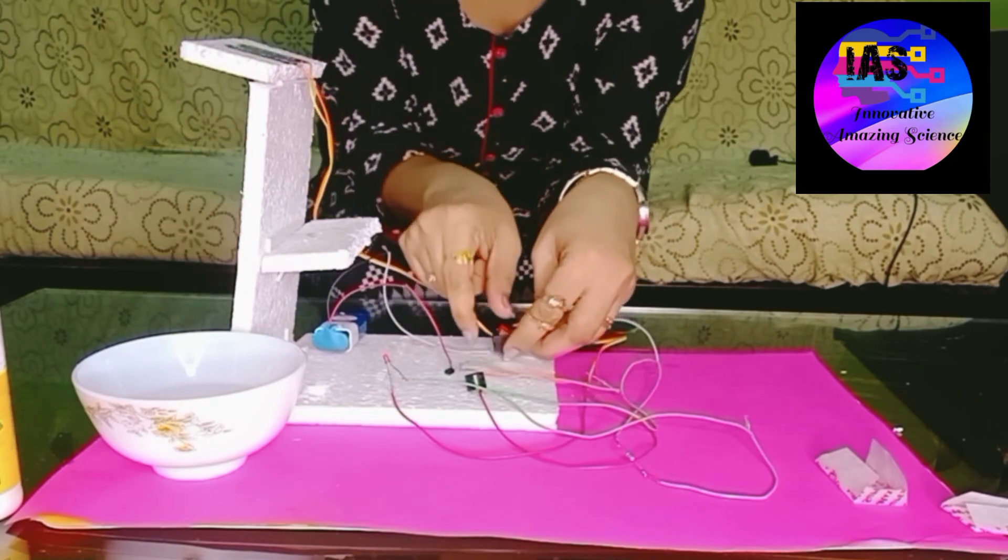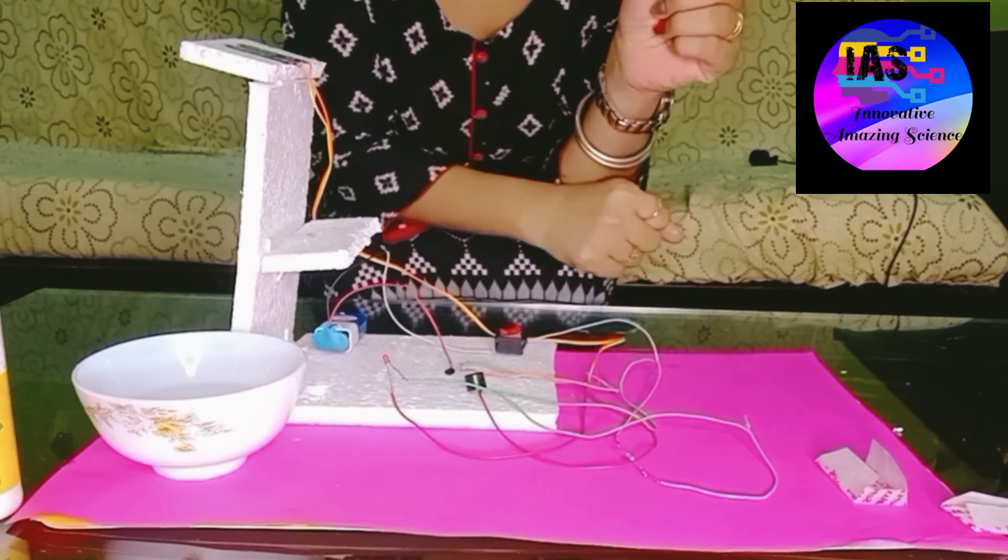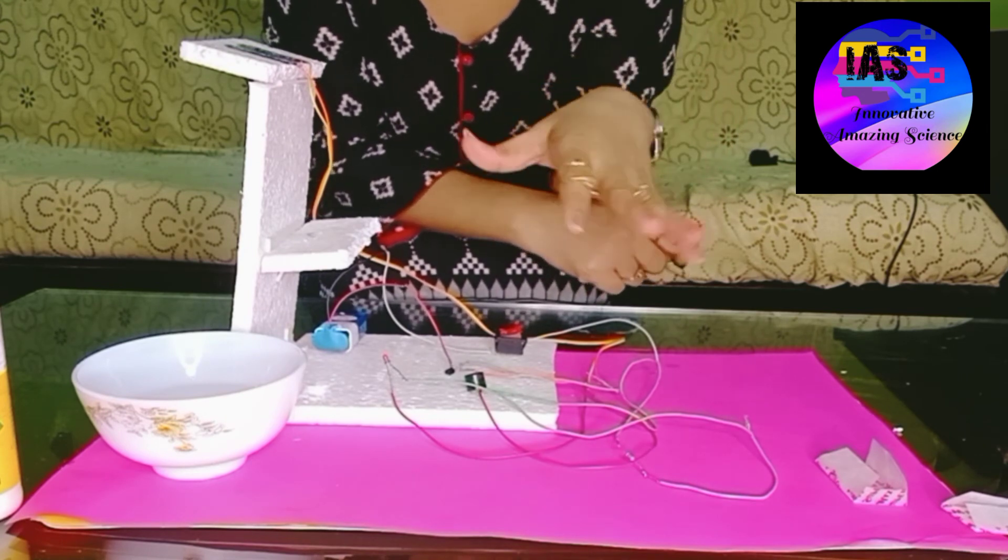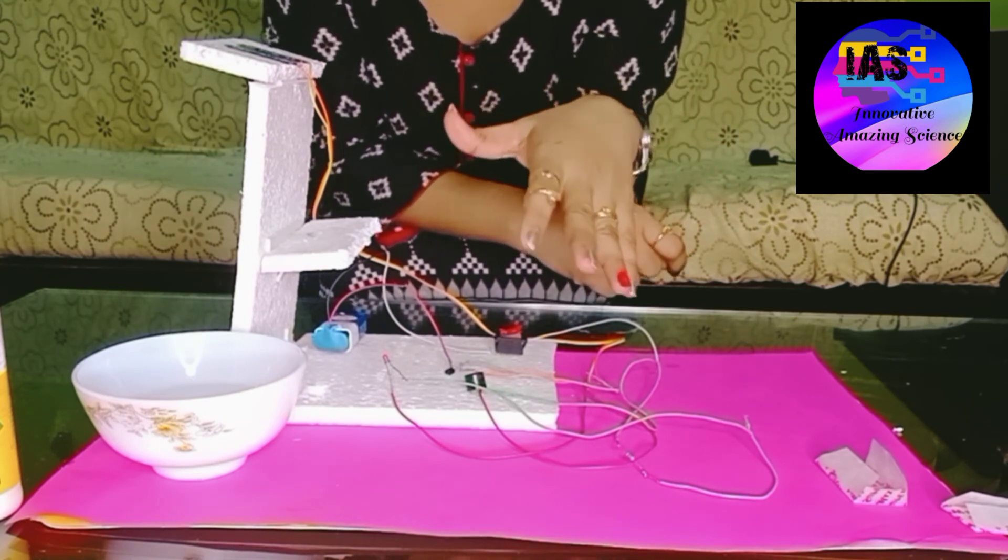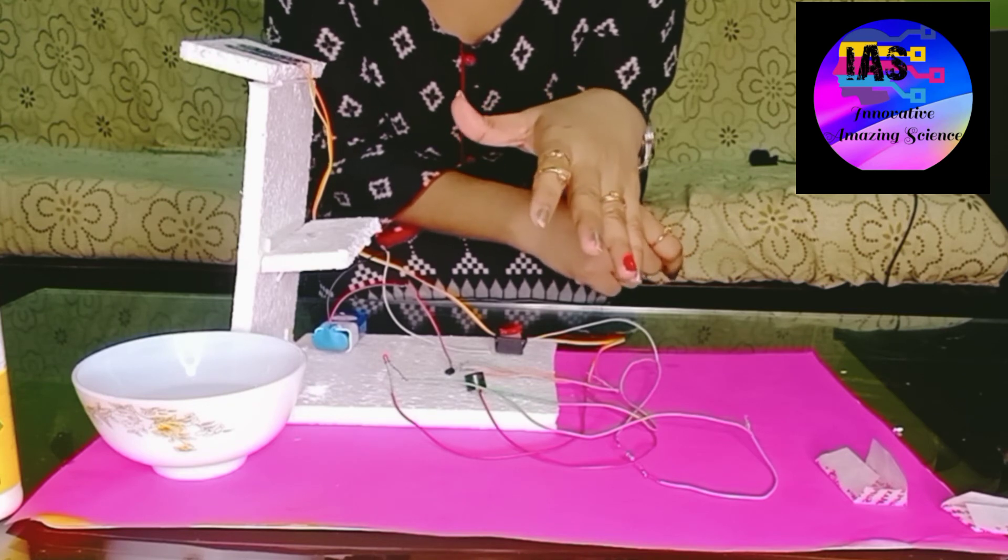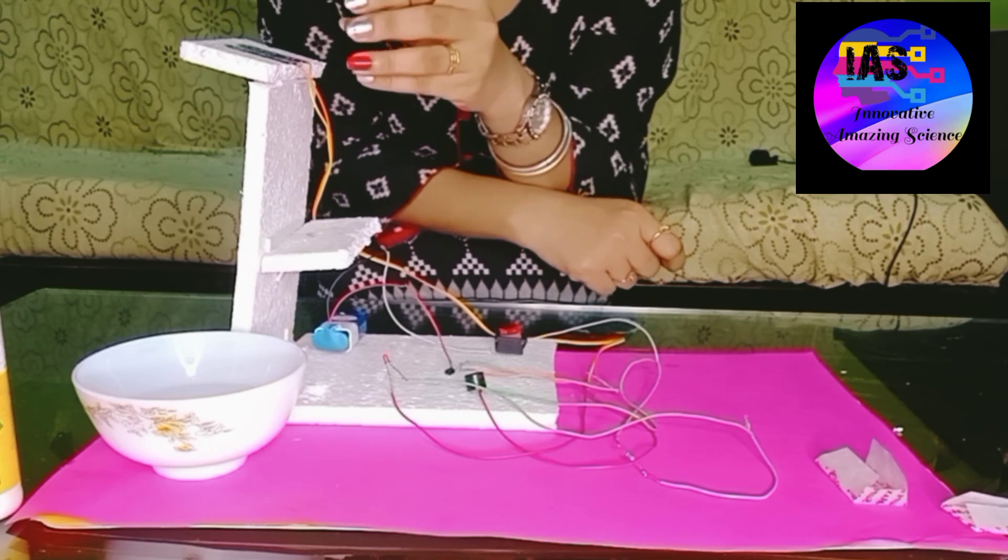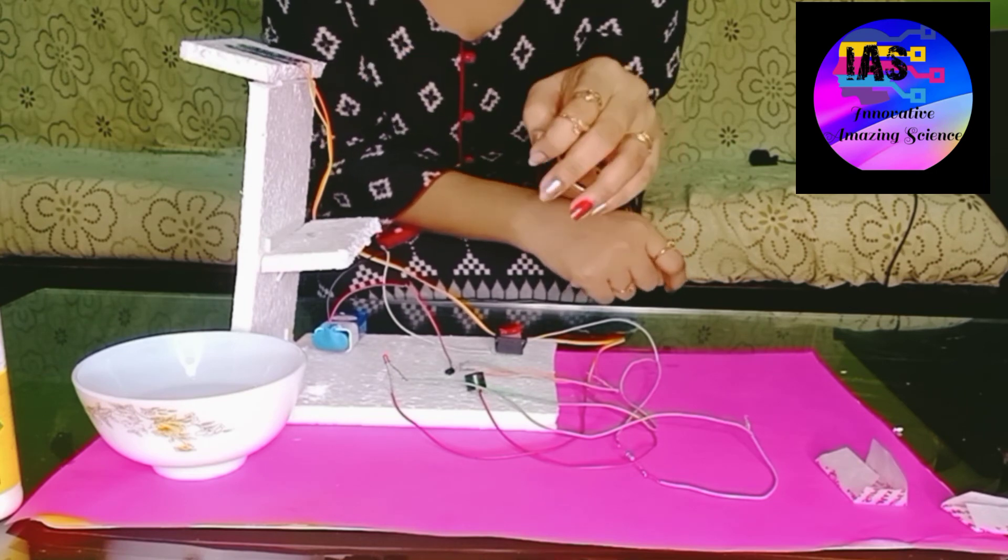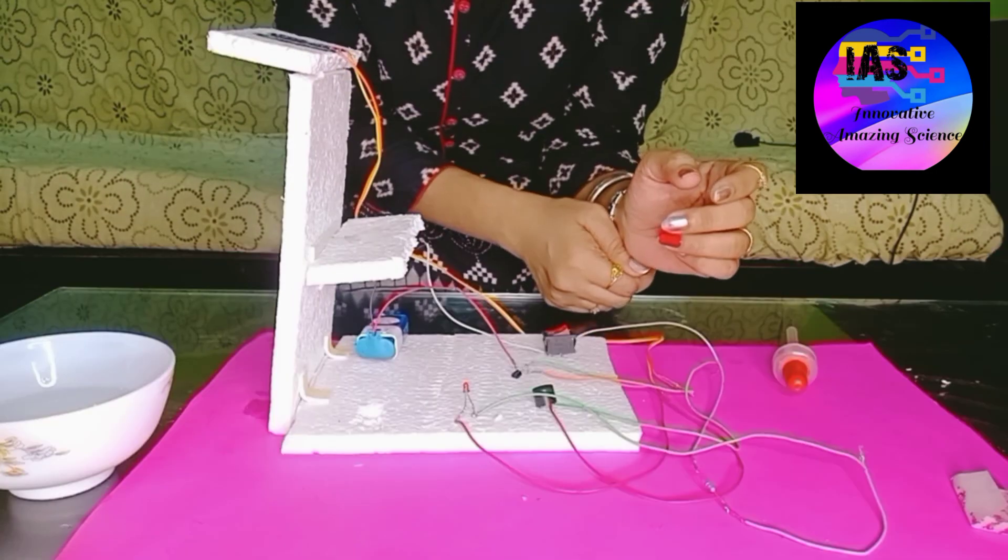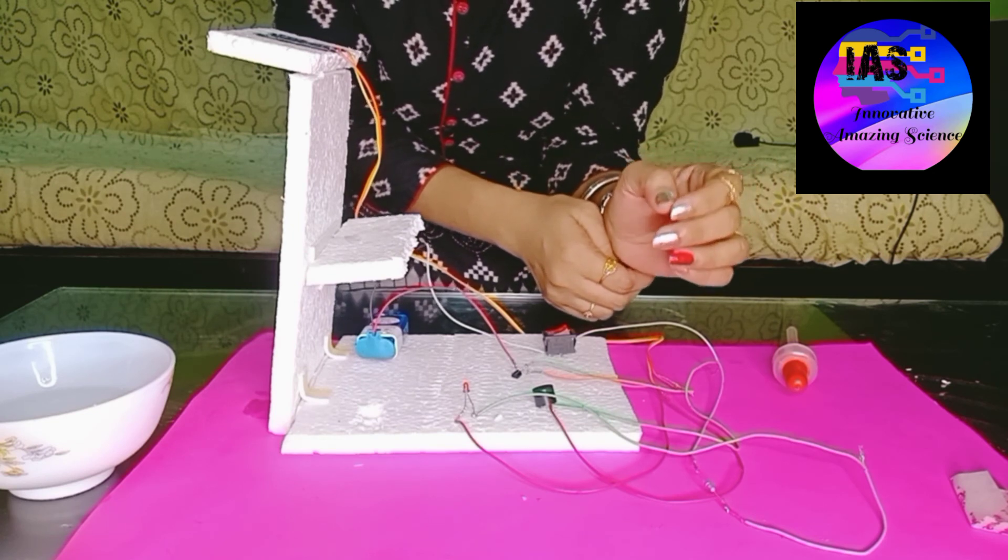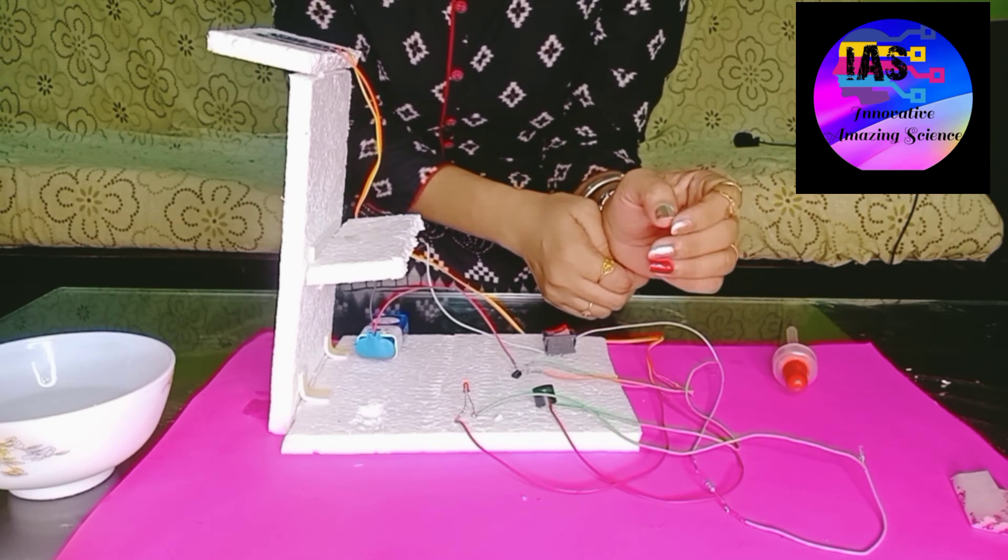I'll just switch this off. Okay. So now you saw how we made this rain water sensor, how this machine was made. And when some drops of water fell on the sensor, how we got the alarm. Just before sometime, we saw how this rain sensor device was working. I'm going to show this once again. So before that, I'll just switch this on.